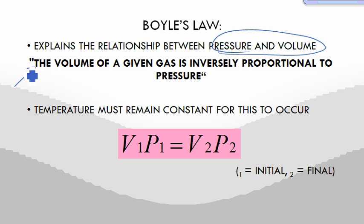The law states the volume of a given gas is inversely proportional to pressure. Of course, in order for this to happen, temperature must remain constant. This is the formula you're going to be using for Boyle's Law: V1 times P1 equals V2 times P2.